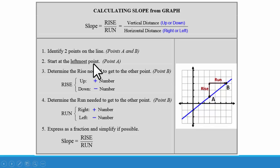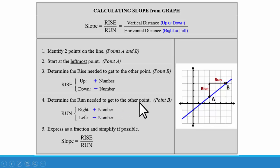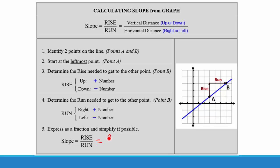First we are going to start at the leftmost point, which we call point A. Then we determine the rise needed to get to the other point by drawing a line up to the y-value of B. If we are going up it is positive, if we are going down it is negative. Here our rise is positive 2. Next we determine the run by drawing a line over to point B. Our run is positive 3, because we are going to the right. So our rise is 2 and our run is 3, giving us a slope of 2 over 3, or two-thirds.